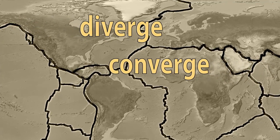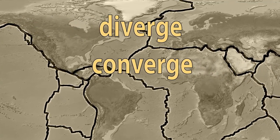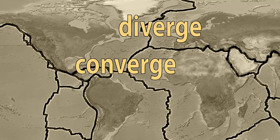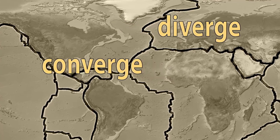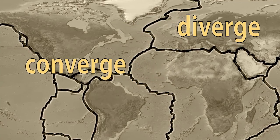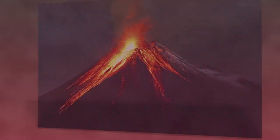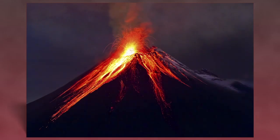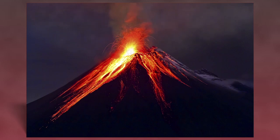To diverge means to separate, while converge means to come together. During an eruption, pressure builds up inside the Earth and forces molten magma to the surface. When magma reaches the surface, it is called lava.